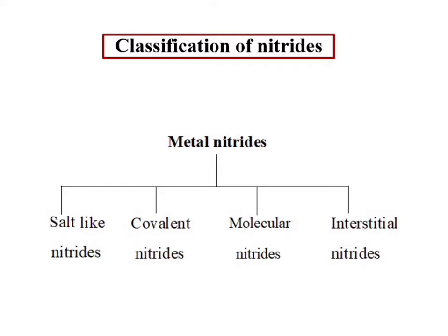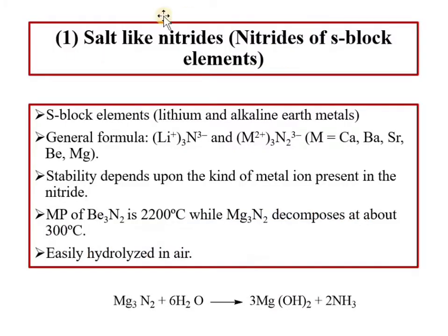The four classes of metal nitrides are: salt-like nitrides, covalent nitrides, molecular nitrides, and interstitial nitrides. We will discuss each one by one.